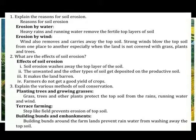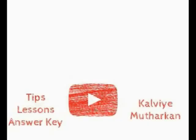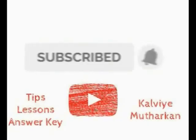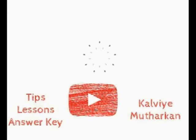Terrace farming: step-like fields prevent erosion of top soil. Building bunds and embankments: building a bund around the farm prevents rain water from washing away the top soil. Thank you.